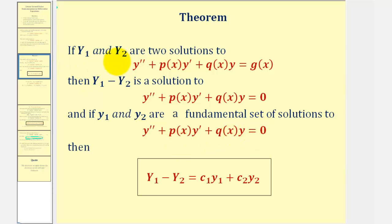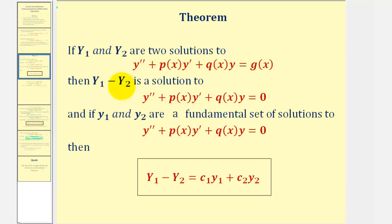If big Y sub one and big Y sub two are two solutions to the non-homogeneous differential equation, then the difference of these two solutions would be a solution to the corresponding homogeneous differential equation. This should make sense because if big Y sub one is a solution, it makes the left side equal to g of x, and so would big Y sub two. Therefore if we subtracted these two, it would be g of x minus g of x, which gives us zero, making this difference a solution to the homogeneous differential equation.